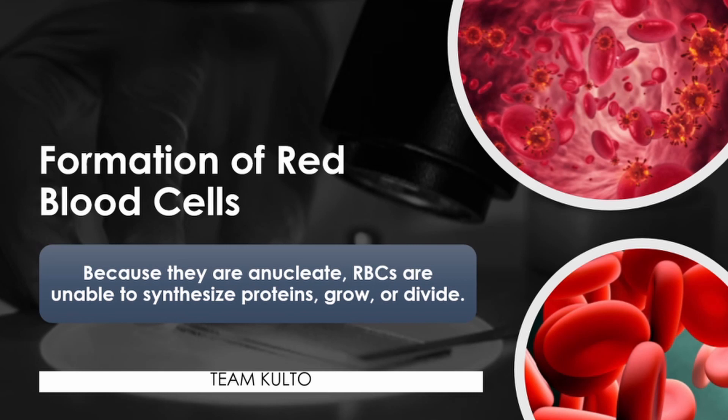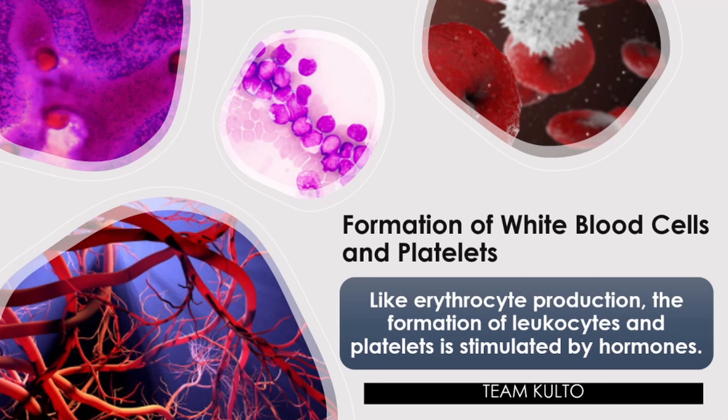Formation of red blood cells: because they are anucleate, RBCs are unable to synthesize proteins, grow, or divide. Red blood cells are formed in the red bone marrow of bones. Stem cells in the red bone marrow are called hemocytoblasts — they give rise to all of the formed elements in blood. If a stem cell commits to becoming a cell called pro-erythroblast, it will develop into a new red blood cell.